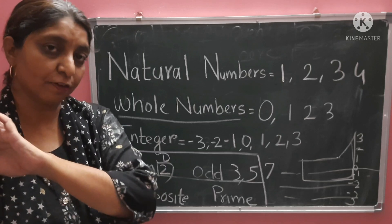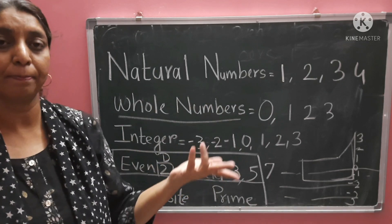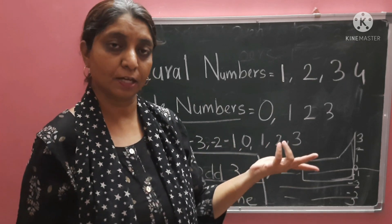For example, numbers that don't divide by 2 are called odd or visham numbers.